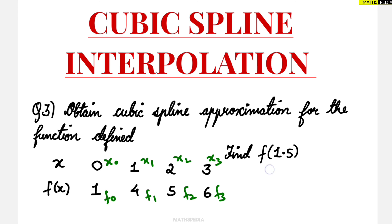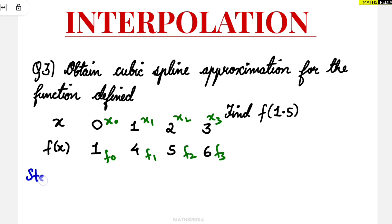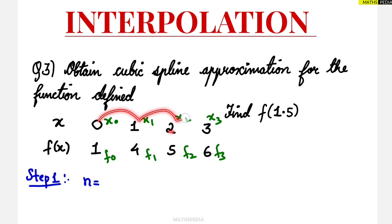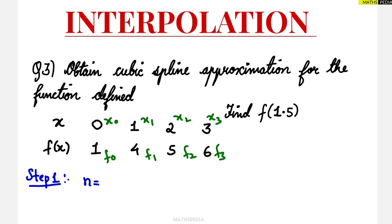Let us proceed with the first step. First you have to define the n value. We count how many x terms there are: 0, 1, 2, 3 — that is 4 points total. Since we count starting from 0, n goes from 0 to 3, so n equals 3.